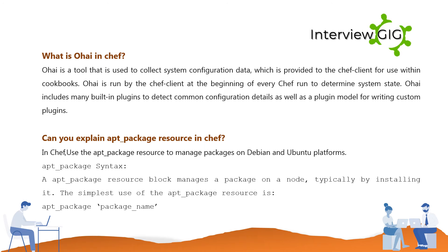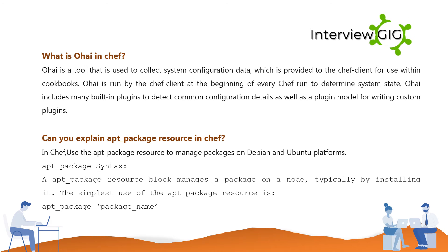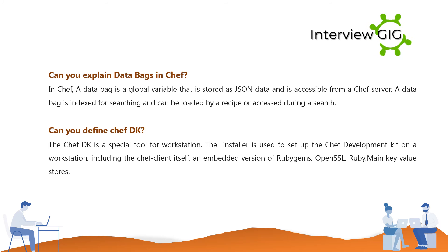Can you explain the apt_package resource in Chef? In Chef, use the apt_package resource to manage packages on Debian and Ubuntu platforms. The apt_package resource block manages a package on a node, typically by installing it. The simplest use of the apt_package resource is: apt_package 'package_name'.